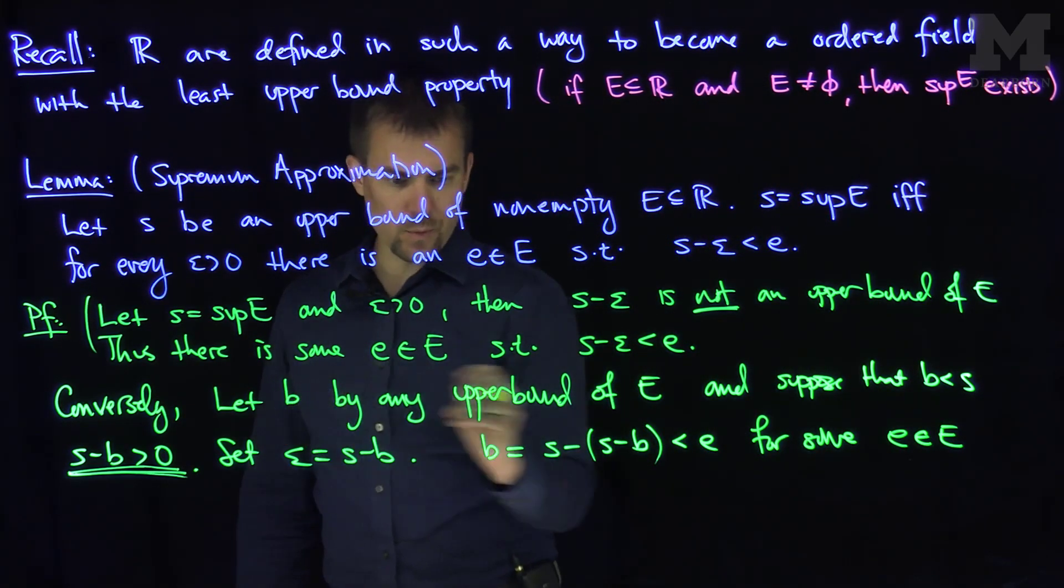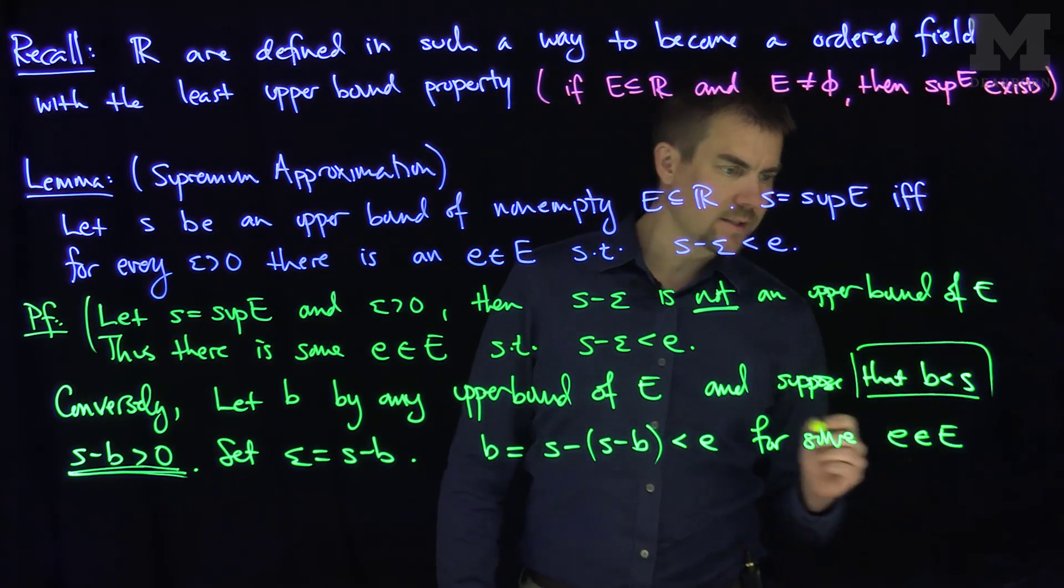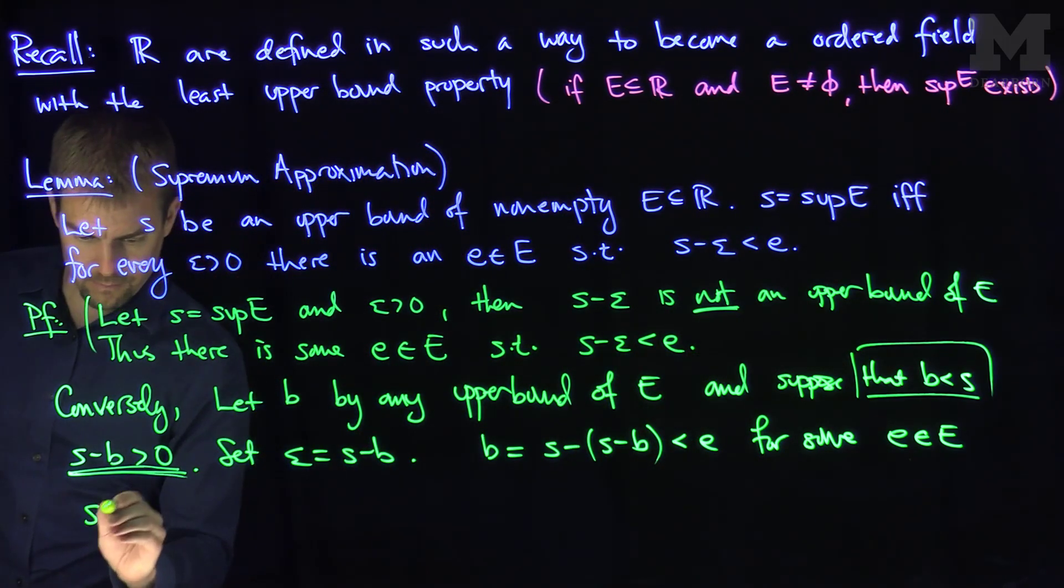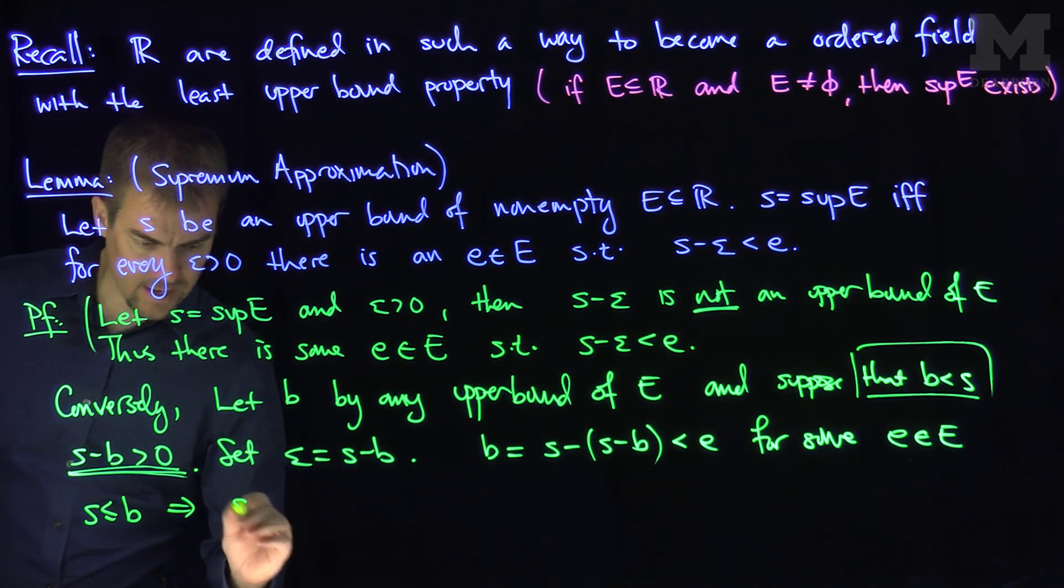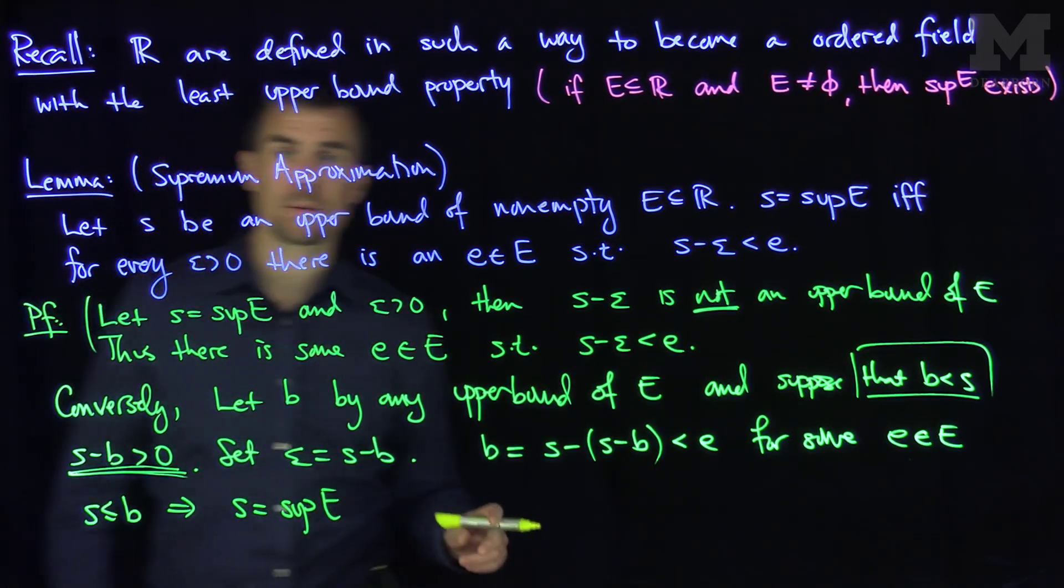That's impossible, because we assumed that B was an upper bound of E, so this supposition is not true. B is not less than S, so S is less than or equal to B. S is less than or equal to B for any upper bound, and that implies that S is the supremum of the set E. It's the least upper bound.